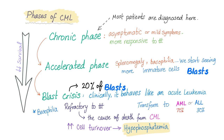In the chronic phase, patients are usually asymptomatic or have mild symptoms. They are very responsive to treatment in this phase, and most patients are diagnosed here. Then, if you do not treat them, they go to the accelerated phase, where we have splenomegaly, basophilia, and we start seeing some blasts. Then they transform to the blast crisis, where 20% — some sources argue 30% — of the cells are blasts.